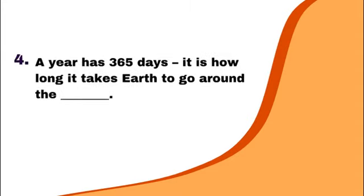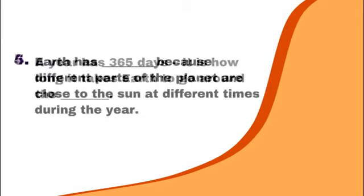A year has 365 days — it is how long it takes Earth to go around the sun. Earth has seasons because different parts of the planet are close to the sun at different times during the year.